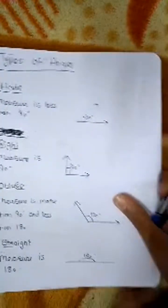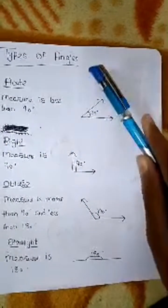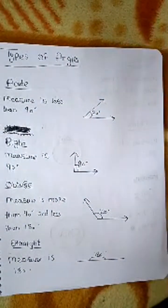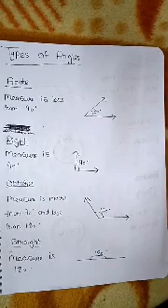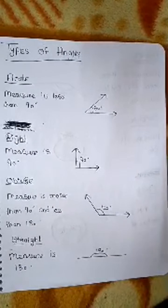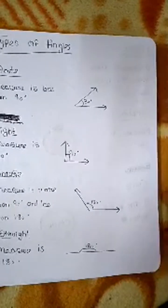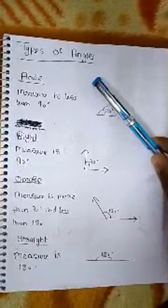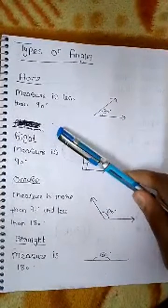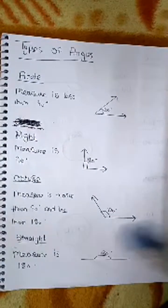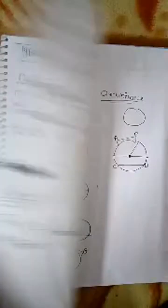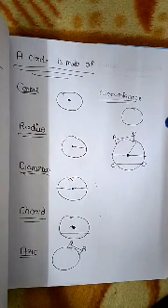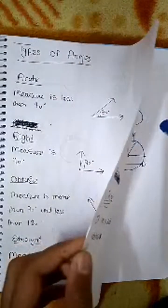Next we will be learning types of angles. What are types of angles? Types of angles can be acute, right, obtuse, straight, reflex, and complete.